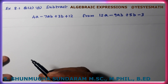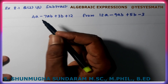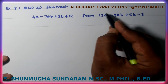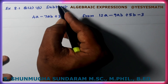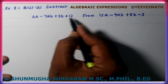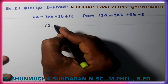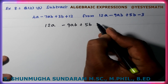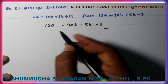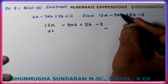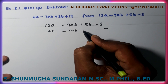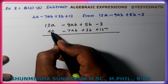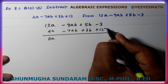Exercise 8.1, Question Number 2: Subtract. Subtract 4A minus 7AB plus 3B plus 12 from 12A minus 9AB plus 5B minus 3. We subtract 4A from 12A: 12A minus 4A equals 8A.